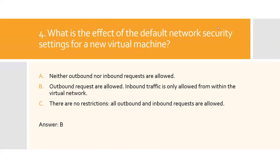Question four: What is the effect of the default network security settings for a new virtual machine? A) Neither outbound nor inbound requests are allowed, B) Outbound requests are allowed; inbound traffic is only allowed from within the virtual network, C) There are no restrictions — all outbound and inbound requests are allowed. Option B is the right answer. Outbound requests are considered low risk so they are allowed by default. Inbound traffic from within the virtual network is allowed, and by placing a virtual machine in a virtual network, the owner is implicitly opting into communication among resources in that virtual network.